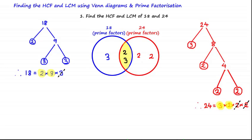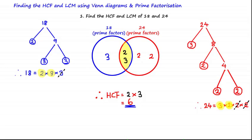In order to find the highest common factor, all we need to do is multiply the prime factors found in the middle of the Venn diagram — otherwise known as the intersection. That's 2 times 3, which is equal to 6. So the highest common factor of 18 and 24 is equal to 6.